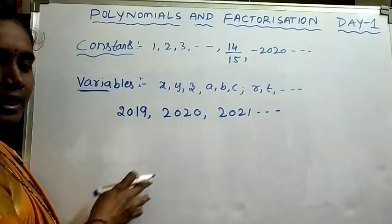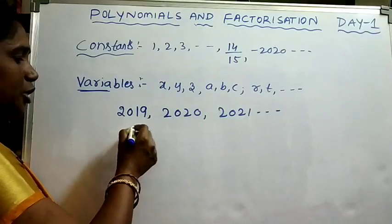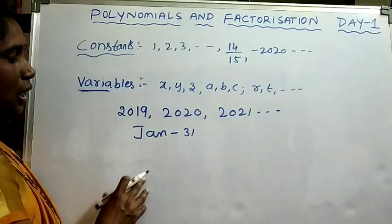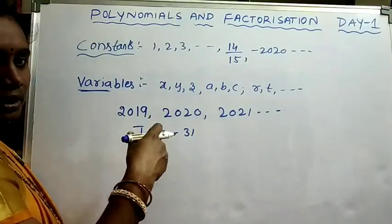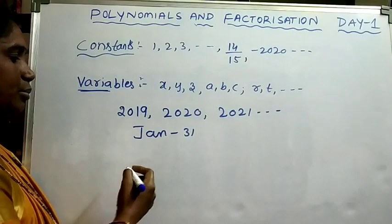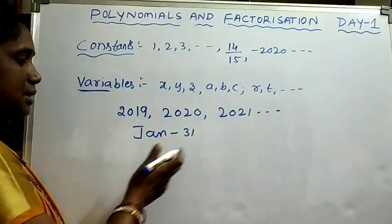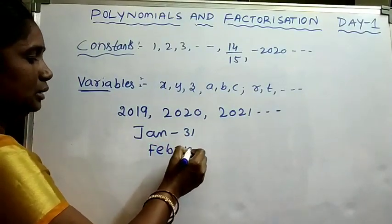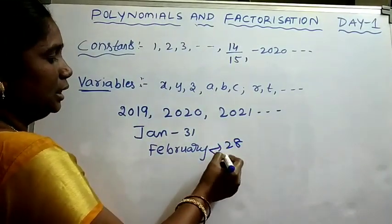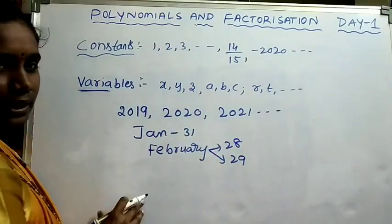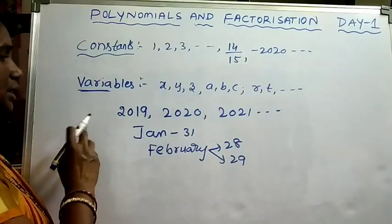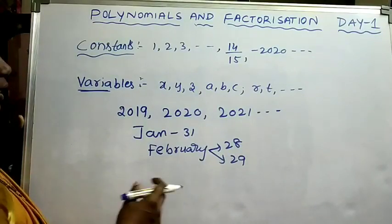Also, consider the number of days in months. In January we have 31 days every year. Similarly, March, April, May, June, July, August, September, October, November, December — every month has fixed days. But what about February? It has 28 days, and in a leap year it has 29 days. Therefore, the number of days in February is varying, so it is considered a variable.